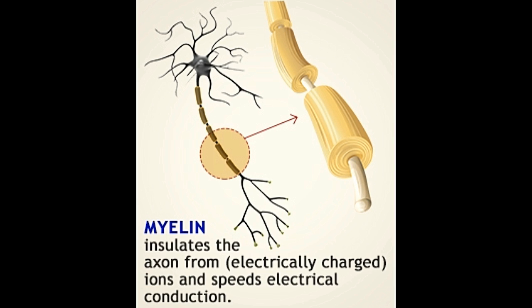Myelin sheath is a coating present on the axons of neurons. It reduces capacitance and increases the electrical resistance for speedy electrical conduction.